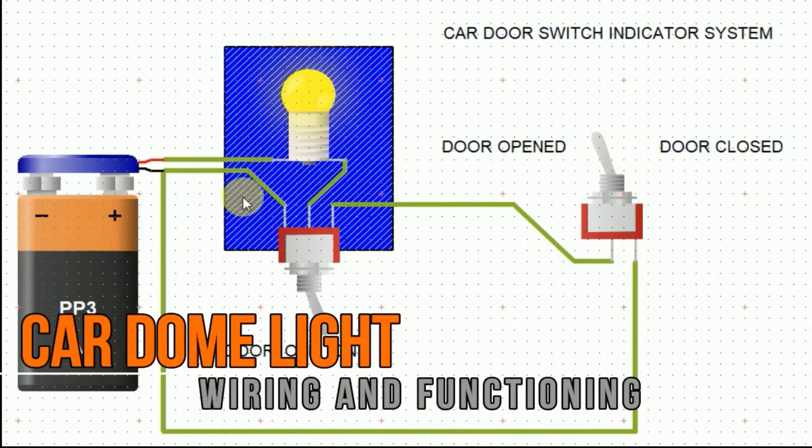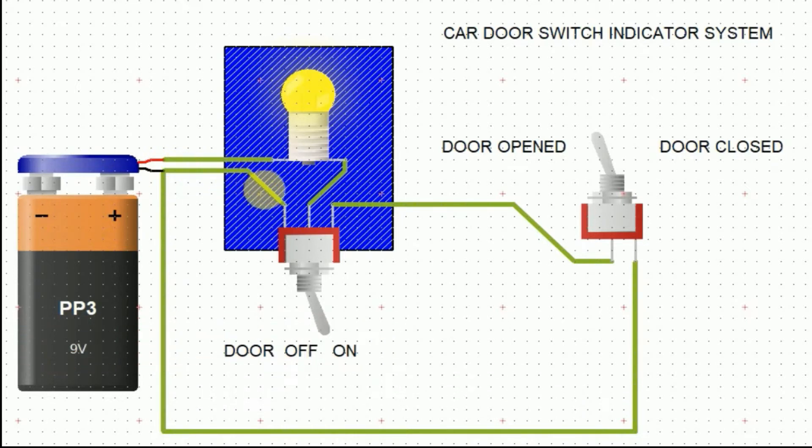This is the wiring diagram of a car dome light. As you know, when the car door is opened, the dome light turns on. Let's check how that is being functioned. The positive wire is directly connected to the light, and one negative wire connects to the light through the dome light switch. Finally, another negative connection connects through the door switch into the dome light switch.